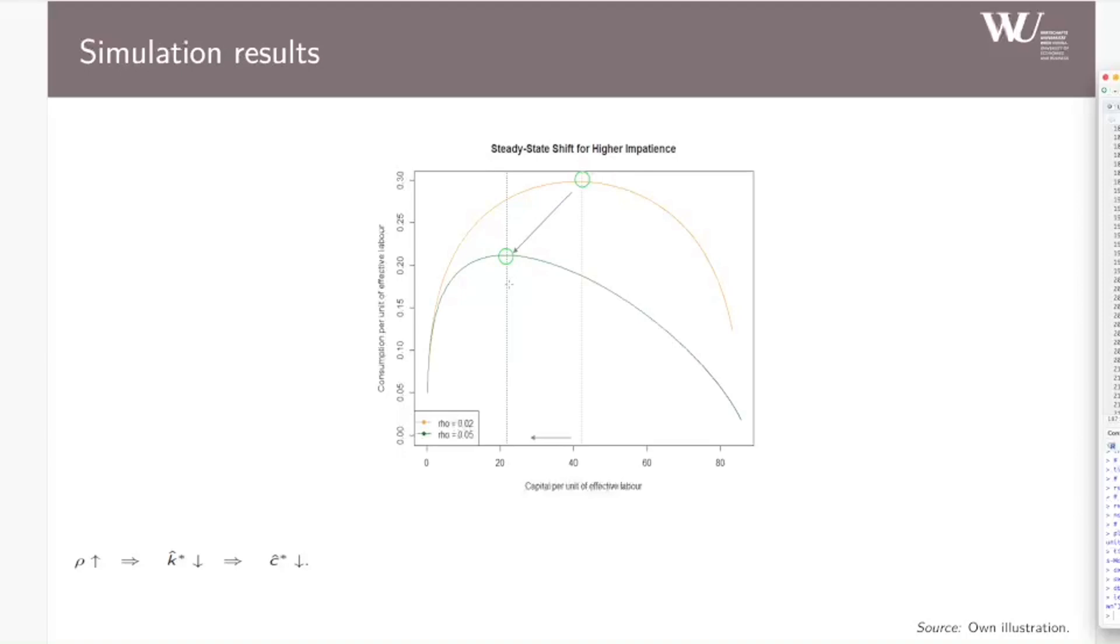To shortly look at it graphically before again doing it in R, we can see that if the rho increases—shown by the green line—the steady state goes down from this initial level. Capital and consumption per unit of effective labor are then lower.